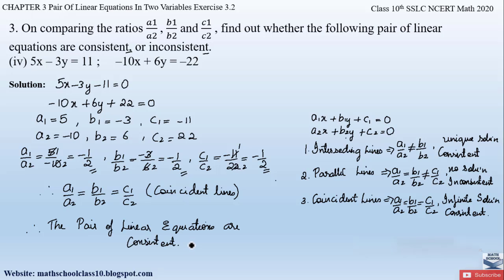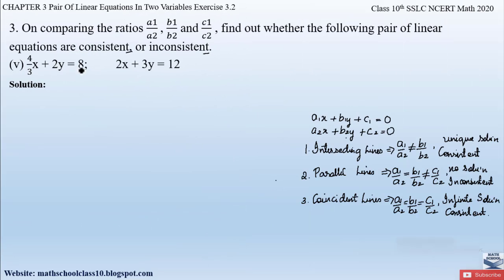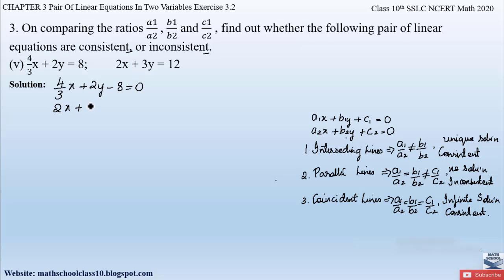Now let us solve the fifth part of the question. In part 5, these are the given equations. Let us equate them to zero to compare with the linear pair of equations. The first equation is (4/3)x plus 2y minus 8 equal to zero, and the second equation is 2x plus 3y minus 12 equal to zero.